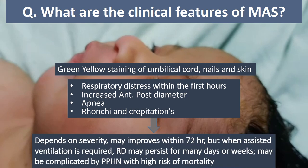Depending on the severity, meconium aspiration syndrome may improve within 72 hours if mild to moderate. But when assisted ventilation is required in severe cases, respiratory distress may persist for many days or even weeks. If associated with persistent pulmonary hypertension, there will be a high chance of mortality.